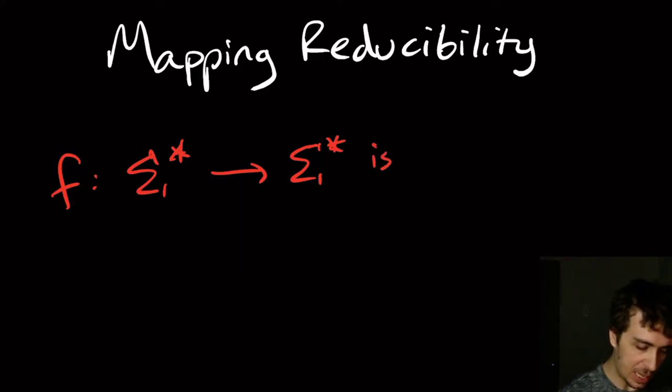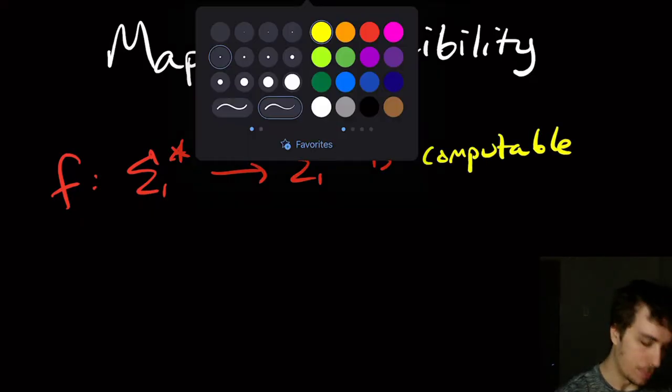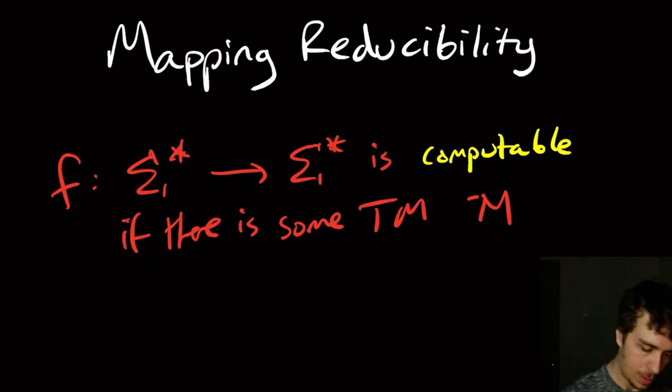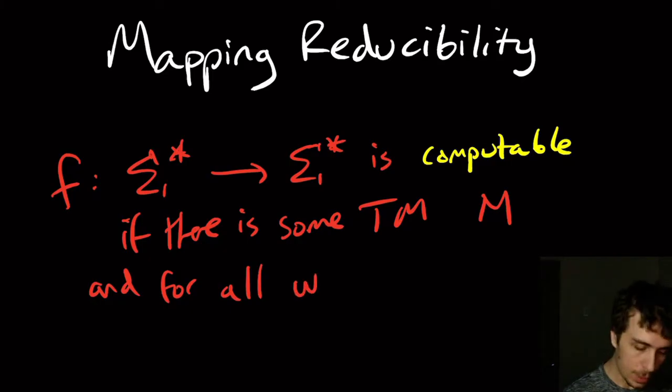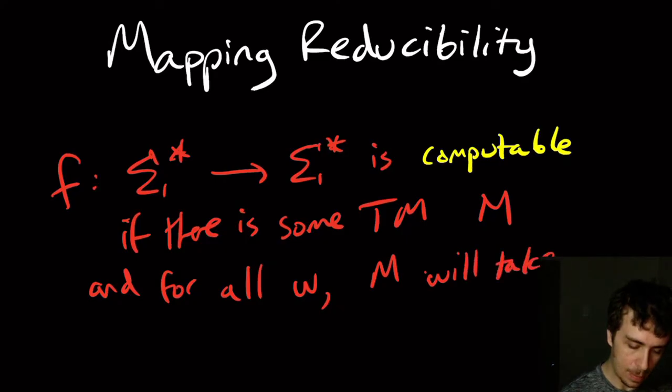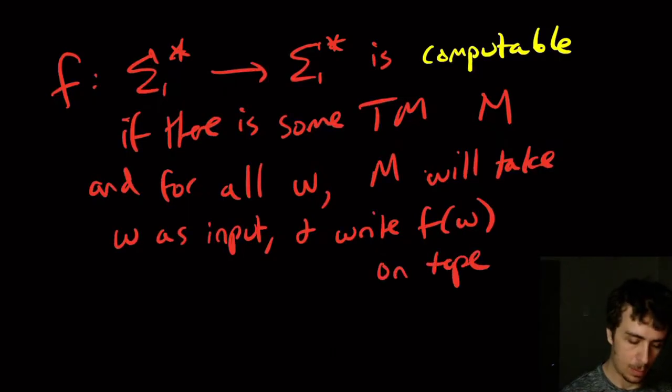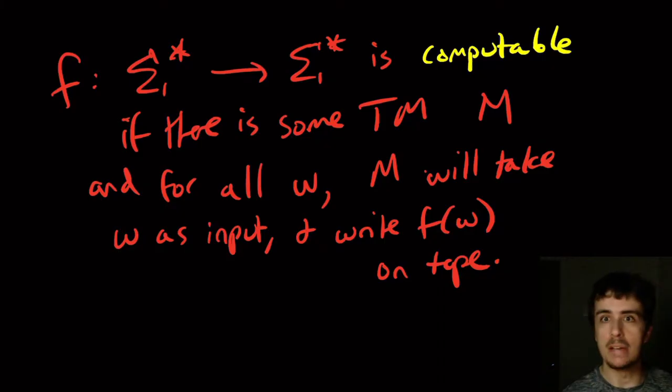We say that this function is going to be computable, or Turing computable as some people call it, if there is some Turing machine, let's call it M, and for all w, M will take w as input and write f(w) on the tape.